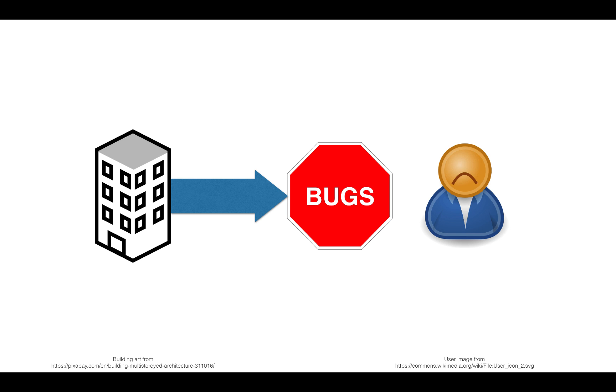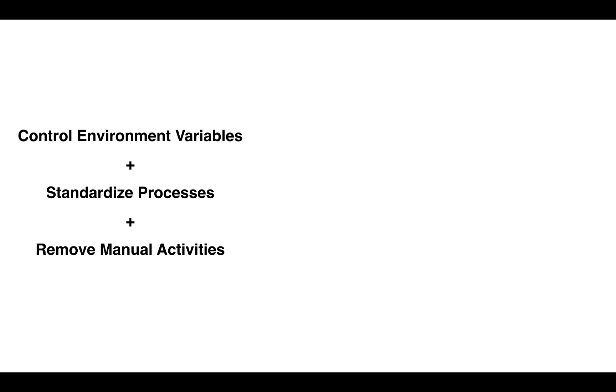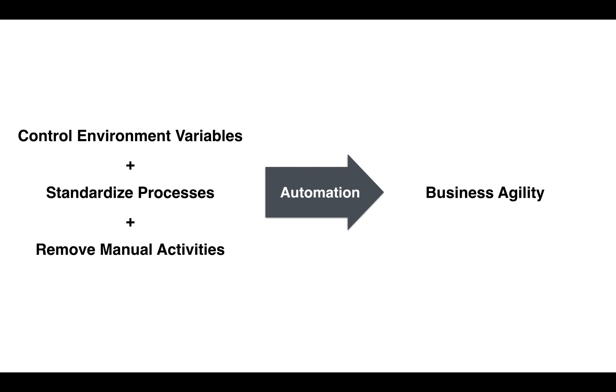To prevent quality problems, businesses must control environment variables and standardize processes. To improve velocity, they must remove slow and erroneous manual activities. All of this can be achieved, as with most human endeavors, through automation. Automating the software manufacturing process, therefore, is imperative to a software organization's competitiveness.